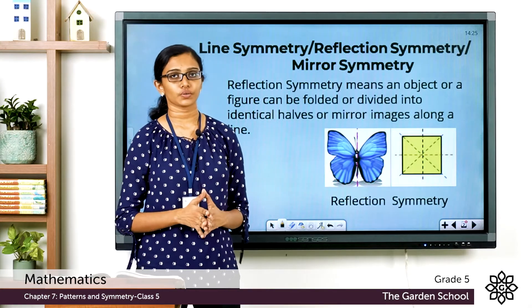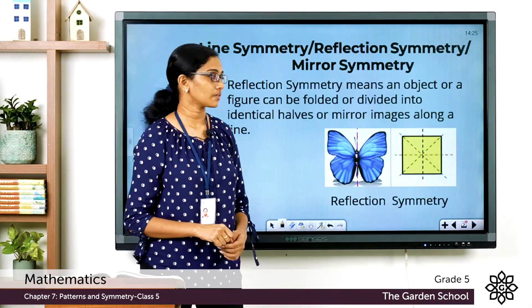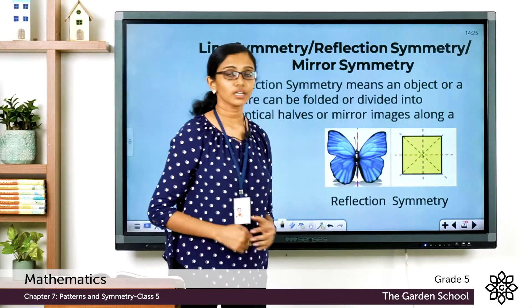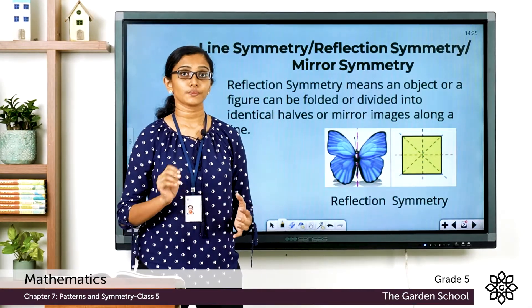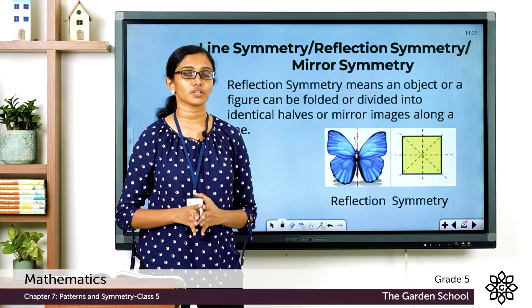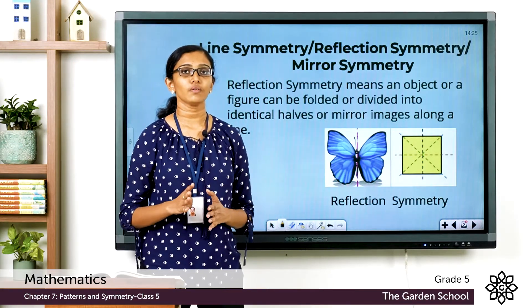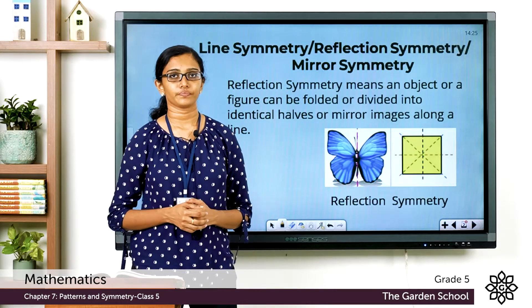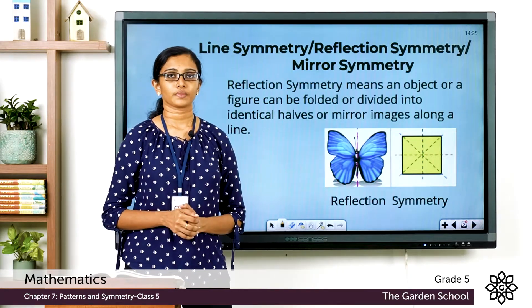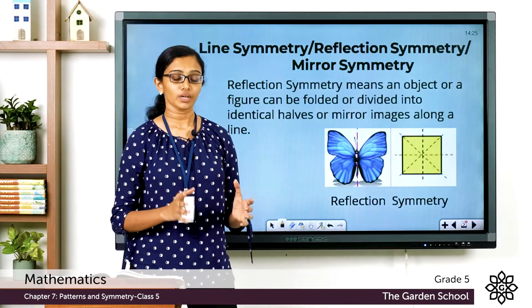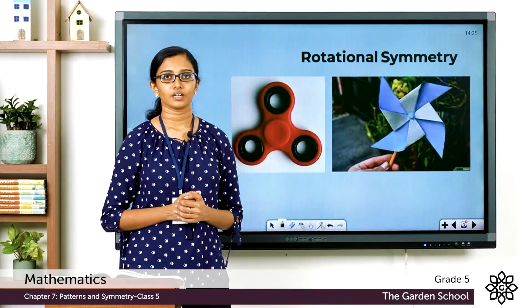These lines which can divide the object or image into identical halves are called lines of symmetry. In the butterfly picture you can see one line of symmetry, whereas in the square you can see four lines of symmetry. So it's possible that the same image or object can have more than one line of symmetry. That was reflection symmetry.